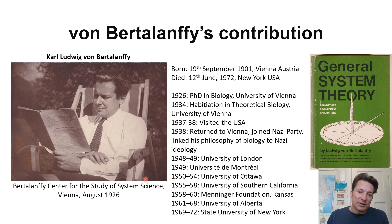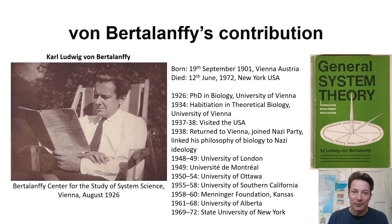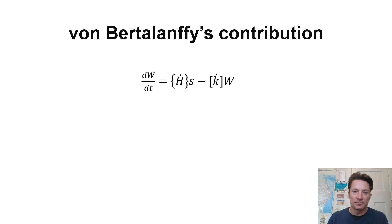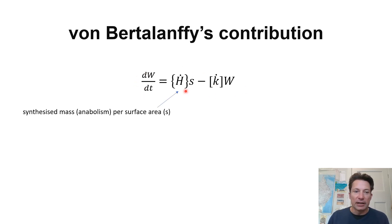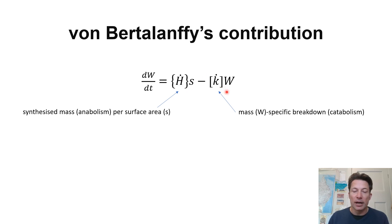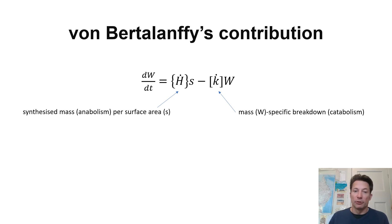This is a picture of Von Bertalanffy in 1926. It's not clear what he's reading as a PhD student, but it may well be Putter's article — he read Putter's article on growth, could read German, and this heavily influenced him. He developed his own ideas about growth based on Putter's ideas. Here's Von Bertalanffy's growth equation, written in terms of change in weight per time — not volumes and surface areas as Putter did. He has a difference term between an anabolic term with a parameter multiplied by surface area, and a catabolic term proportional to weight — essentially the same model, and he admits this and cites Putter.